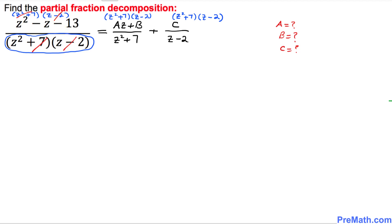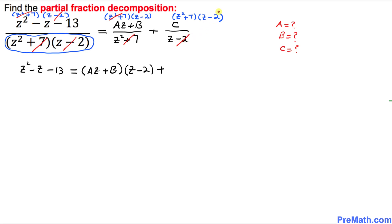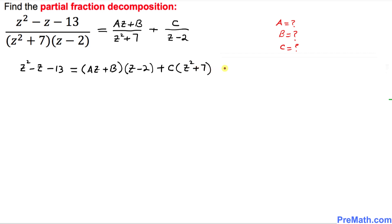We can see that z squared plus 7 cancels out, and z minus 2 cancels out as well. So we simply end up with z squared minus z minus 13 equal to az plus b times z minus 2, plus c times z squared plus 7. I am going to call this equation number 1.